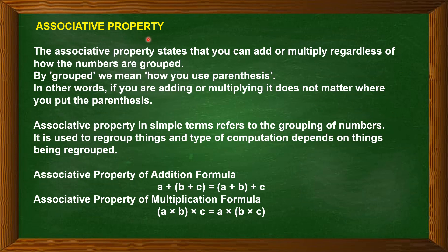The associative property states that you can add or multiply regardless of how the numbers are grouped into brackets. By grouping, we mean how we use the parentheses. For example, take 2 plus 3 plus 4. If I put the bracket as (2 plus 3) plus 4, that gives 5 plus 4, which is 9.